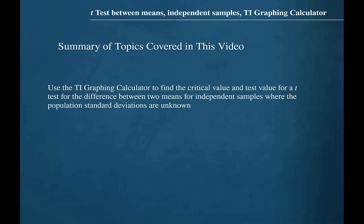In this video we learned how to use the TI graphing calculator to find the critical value and test value for a t-test for the difference between two means for independent samples where the population standard deviations are unknown.